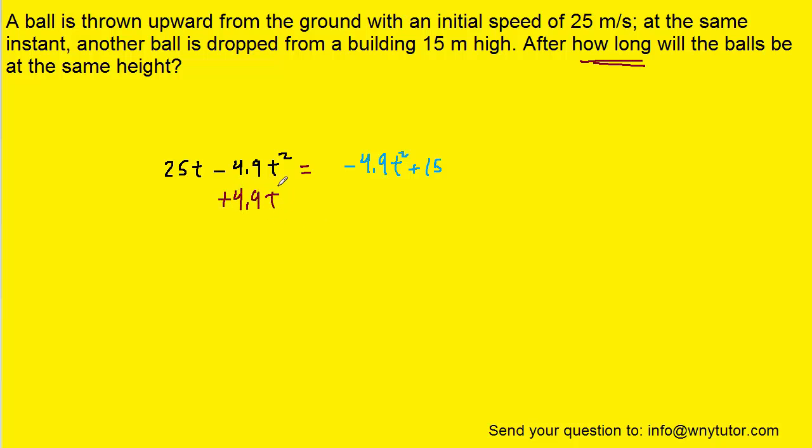We can add 4.9 t squared to both sides of the equation, and that term will cancel on both sides. Then all we have to do is divide both sides by 25, and we can see that the time at which the balls reach the same height will be 0.6 seconds. And that is indeed the correct answer.